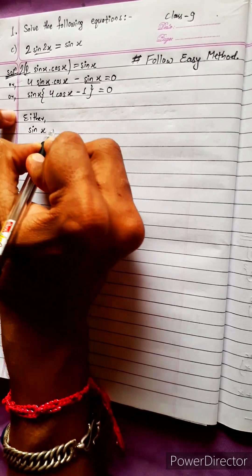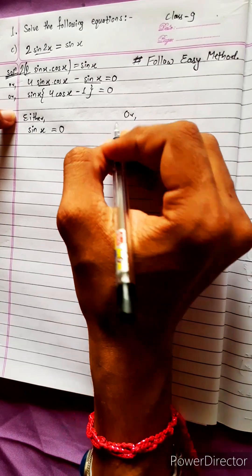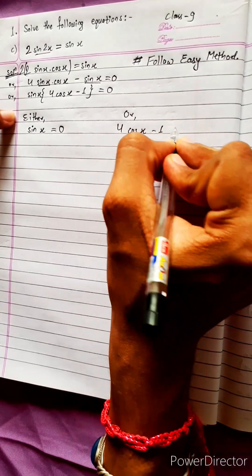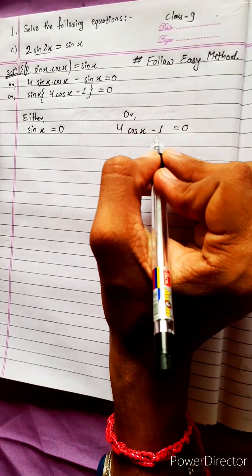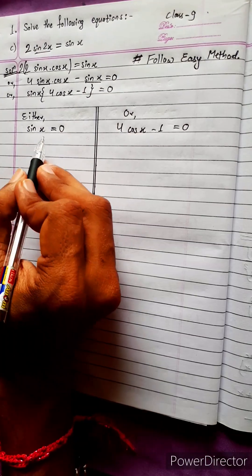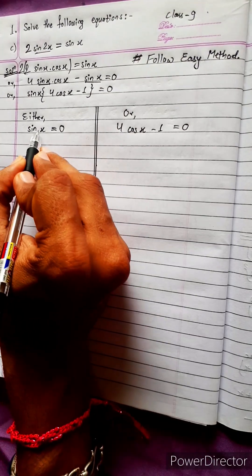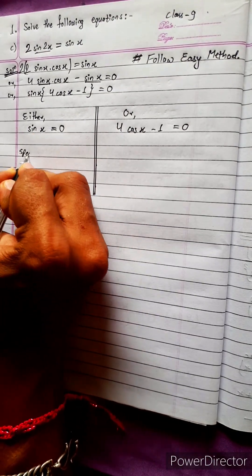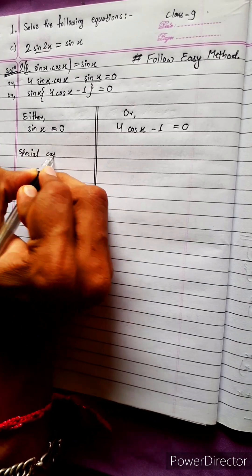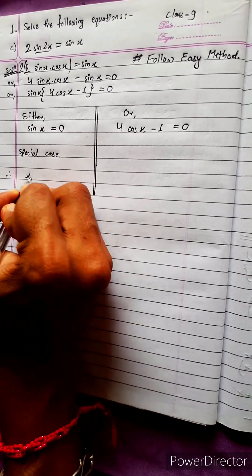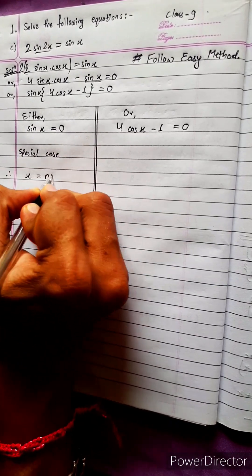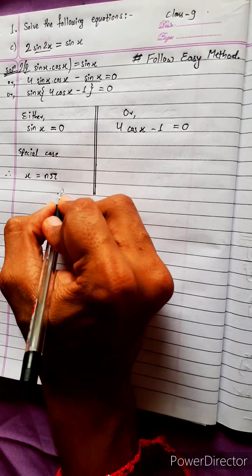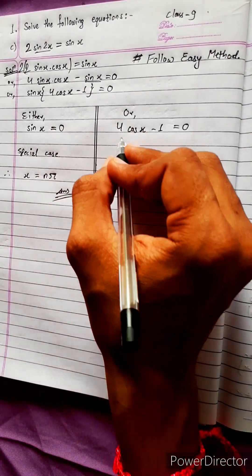Either sinx equal to 0, or 4cosx minus 1 equal to 0. For sinx equal to 0, the direct formula gives x equal to nπ.